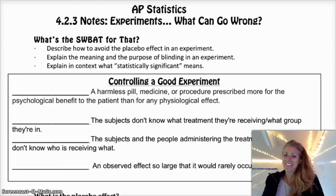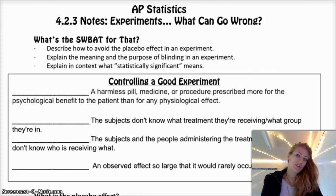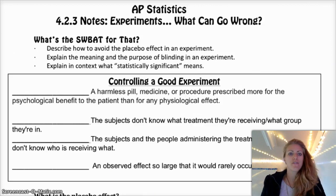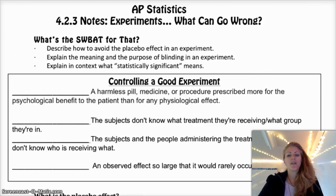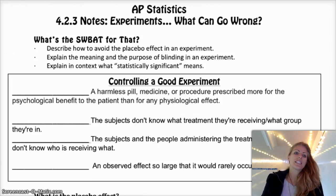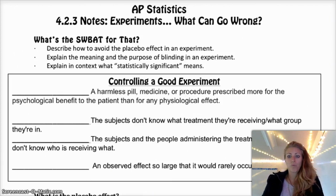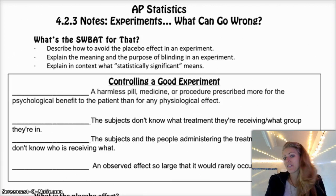Hey AP Stats, hope you guys are having a great day. So we're moving on to Chapter 4, Section 2, Day 3, or Lesson 3 of the practice of statistics. We're going to talk today about how experiments can go wrong and how to deal with that. Today we're going to talk about the placebo effect, what blinding is, and what statistically significant means.